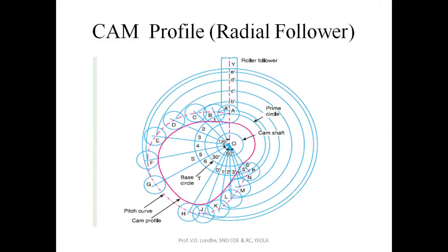For the cam, the minimum radius represents the base circle. The trace point is the central point of the roller, and whatever circle passes through the trace point is the prime circle. For this problem, the sense of rotation of the cam will be clockwise, so the profile will be drawn on the opposite side of the cam.